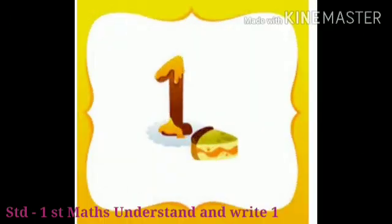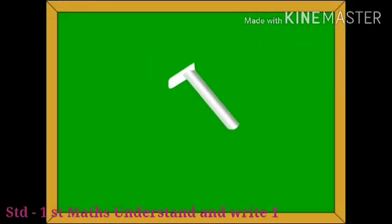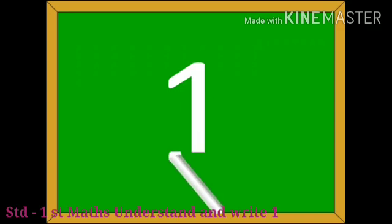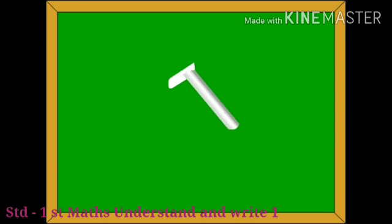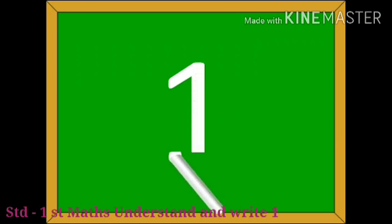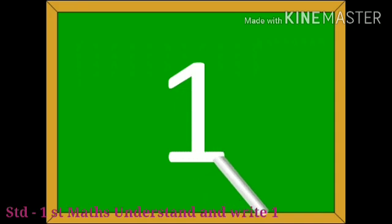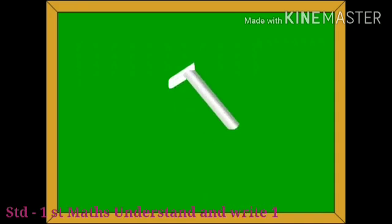Now, let's learn how to draw the number one. A short slanting line, then a straight line and a horizontal line makes the number one. A short slanting line, then a straight line and a horizontal line makes the number one.